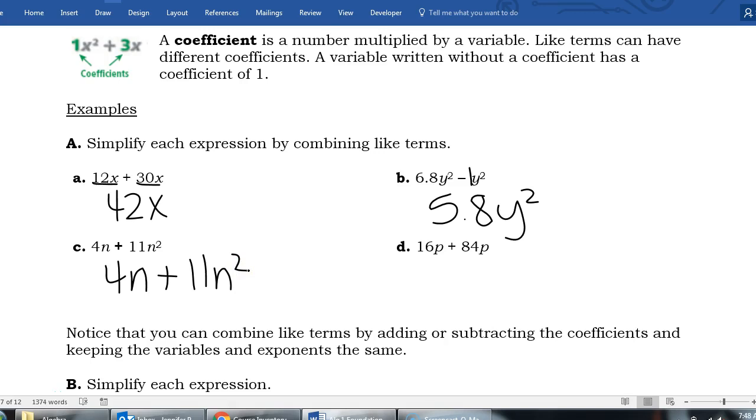And the last one, we have 16p and we have 84p, not much different than our first question. We have like terms here and here. So we're going to combine the coefficients. If we have 16p's and we add 84p's, we now have 100p's.